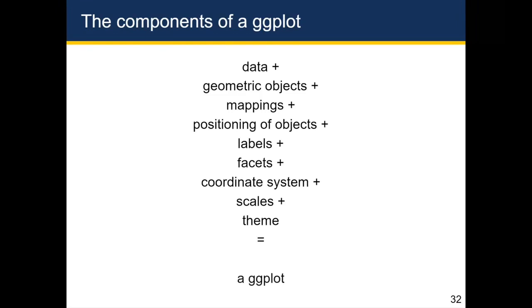So you might be thinking, oh my goodness, I don't want to add all these things together. All I want is a scatter plot. Why do I need to deal with all this kind of complexity? One nice thing is that ggplot will actually generate all those components automatically. And so all you have to do is really specify the things that you need. And we'll show this through some examples.